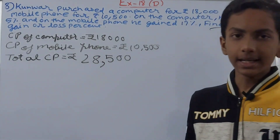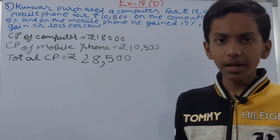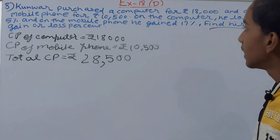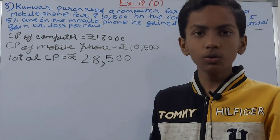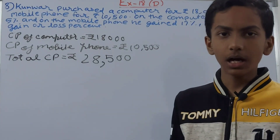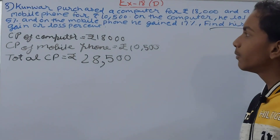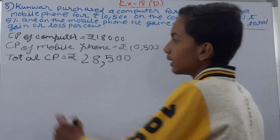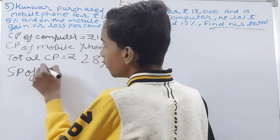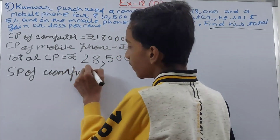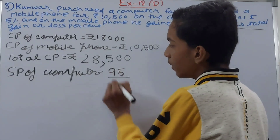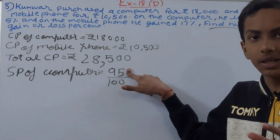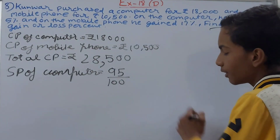Now we know the total cost price, and we also need the selling price to find the gain or loss percent. Since on the computer he lost 5%, we use the formula: SP = (100 − loss%) / 100 × CP. So SP of computer = 95/100 × 18,000. We get 95 because 100 minus the loss percent of 5 equals 95.